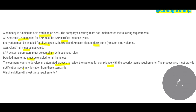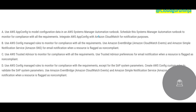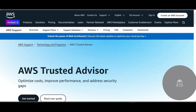The company wants to develop an automated process to review the system for compliance. The process must provide notifications — so for any deviations, they should get an email or some sort of notification alerting the team that something is out of compliance.